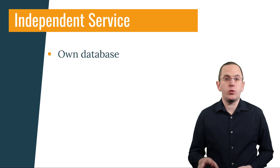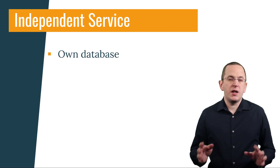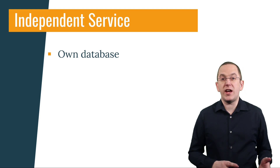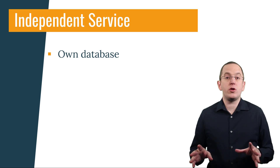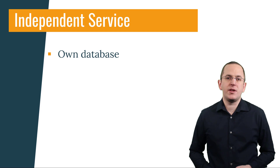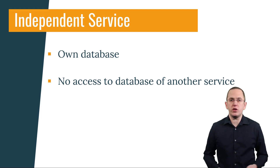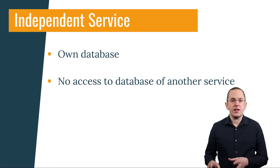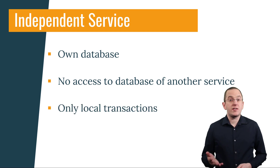Each service has to have its own database to keep it independent of all other services. I often get asked if you can deploy the databases of multiple services onto the same database server. I prefer to avoid that because it introduces the risk that database issues affect multiple services at once, but this can be an option for your first systems to reduce the complexity of your deployments. No microservice has access to the database of another service — that also includes foreign key references, database views and stored procedures. Having direct access to any data store of another service introduces a very strong dependency. Each service manages its own local transactions and doesn't participate in any distributed transaction.